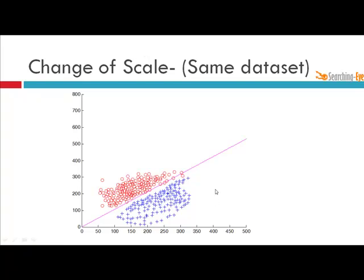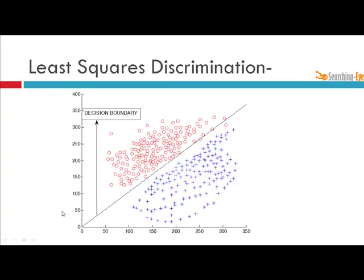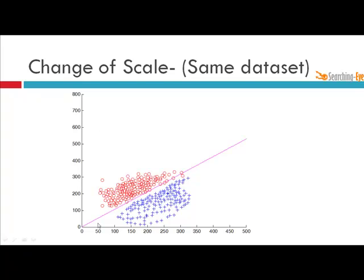Now this is the same dataset with the same separating hyperplane. Only the scale is changed. Here the scale was from 0 to 400 and 0 to 350. Here the scale is from 0 to 500 and 0 to 800. This is just to show you the effect of distant data points.